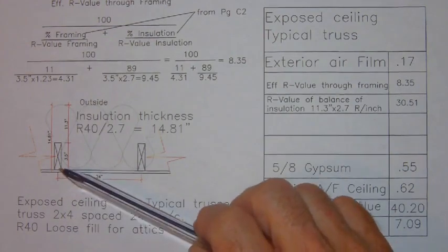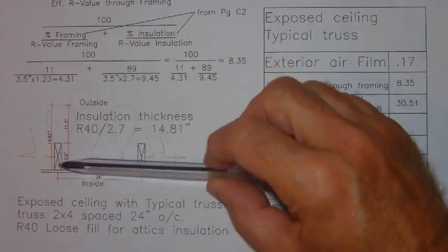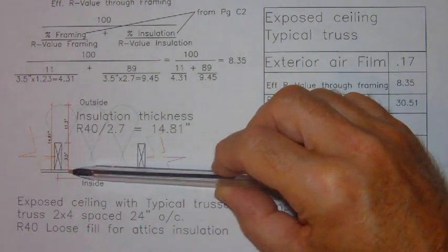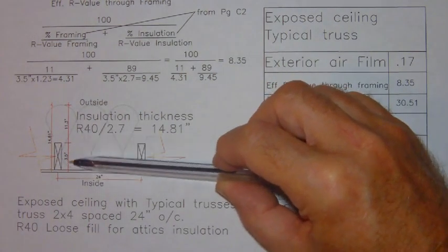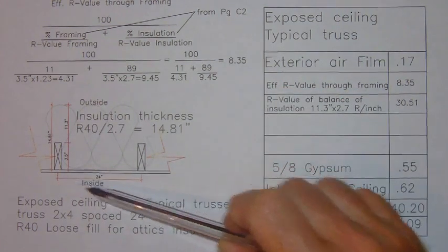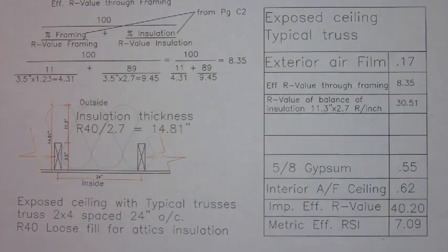We know that our trusses are made of 2x4s, which means that the 2x4 is actually 3.5 inches tall, or deep if you wish. And we know that we've got 24 inches on center.